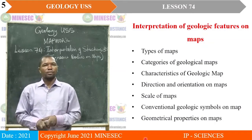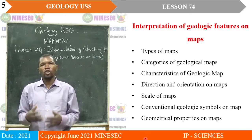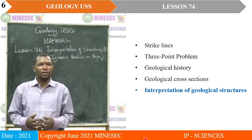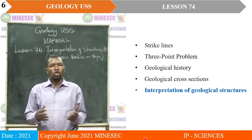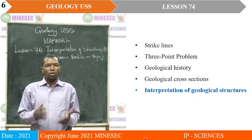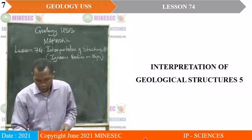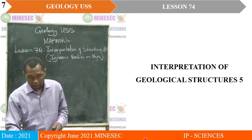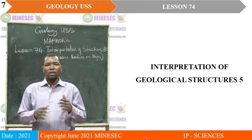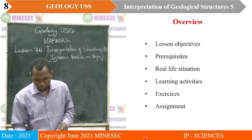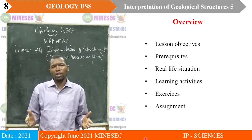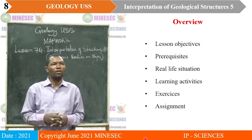We are still on map work, on the sub-topic interpretation of geologic features on maps. We have seen types of maps, strike lines, as well as the three-point problems, geological history, and geological cross-sections. We will now concentrate on interpretation of geological structures 5, focusing on igneous bodies on maps. Through our lesson we will cover the objectives, prerequisites, real-life situation, and learning activities. We will have exercises and end with an assignment.